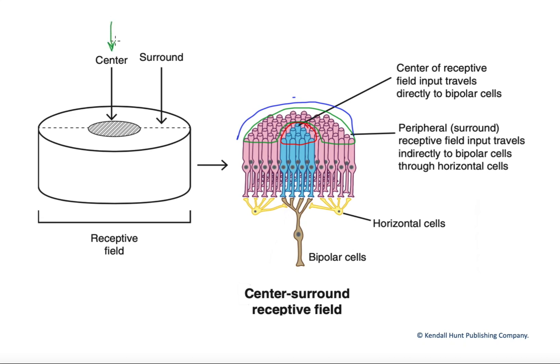When light comes in and hits the center of an on-center bipolar receptive field, it's an on-cell, meaning the light hitting the center would actually stimulate this bipolar cell, and light hitting the surround would inhibit it.